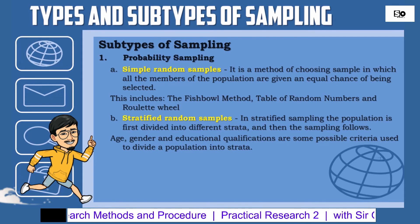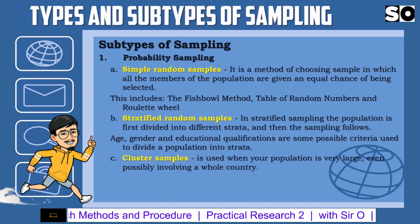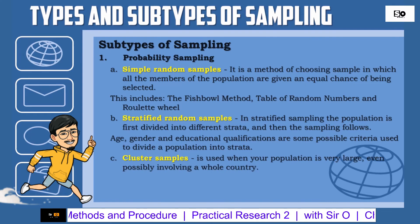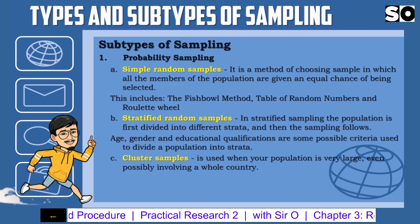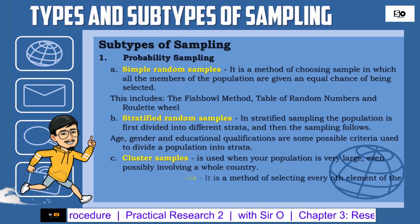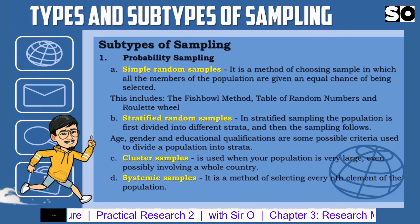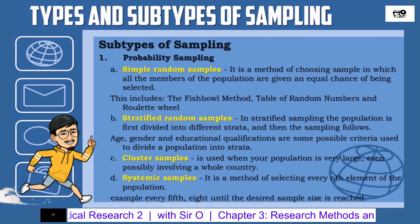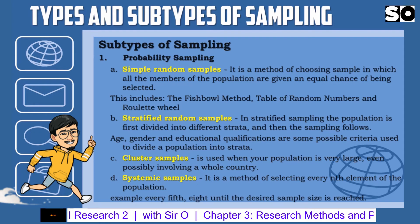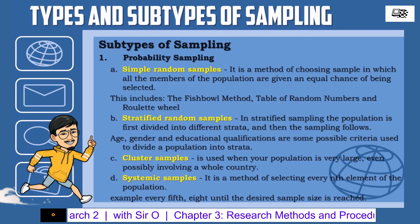Number 3: Cluster Samples — used when the population is very large, even possibly involving a whole country. Number 4: Systematic Samples — a method of selecting every nth element of the population. Examples of systematic samples include every fifth or eighth element, until the desired sample size is reached.